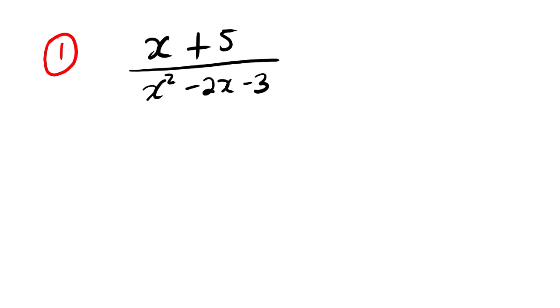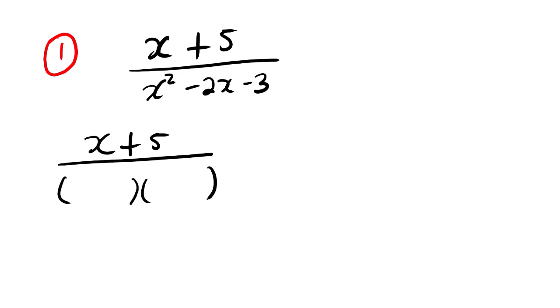Let us start with this example. The first step is to factorize the denominator. Factorizing the denominator, we are going to have x + 5 — we open two brackets and find the factors of x. If the sign of the constant is negative, the signs in the brackets will be different: one positive and one negative.